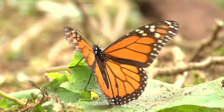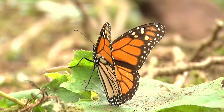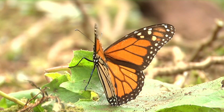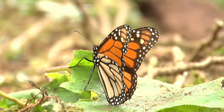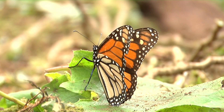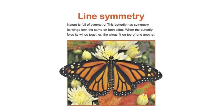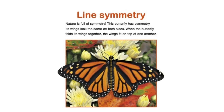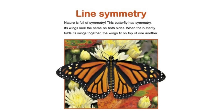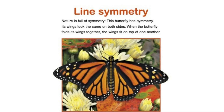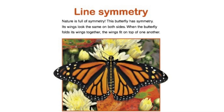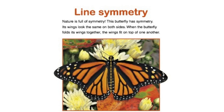Some animals have the same parts or patterns on both sides of their bodies. A pattern is made up of shapes and colors that repeat. The two wings on the left side of the butterfly's body have the same shape and pattern as the two wings on the right side, as you can see.